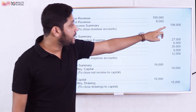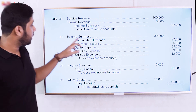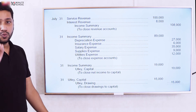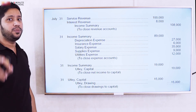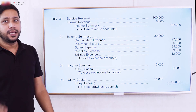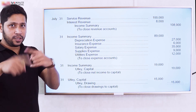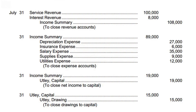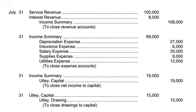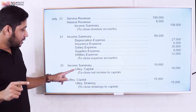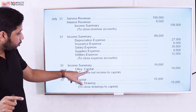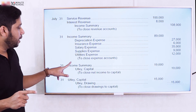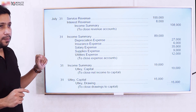The income summary balance is then reviewed. If it shows a credit balance, it means there is a profit. We then transfer this profit to capital by debiting income summary and crediting the capital account, thereby closing the income summary.